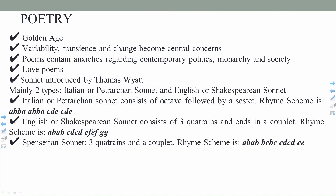Poetry. During the Elizabethan age, poetry can be called the golden age. Variability, transience, and change become central concerns. Poems contain mainly anxieties regarding contemporary politics, the monarch, and society. There are mainly love poems, and the sonnet was introduced by Thomas Wyatt and Thomas Seagull. There are mainly two sonnets: Petrarchan sonnets and Shakespearean sonnets. To identify a Petrarchan sonnet through its rhyme scheme: it is a-b-b-a, a-b-b-a for the octave, and c-d-e, c-d-e for the sestet.